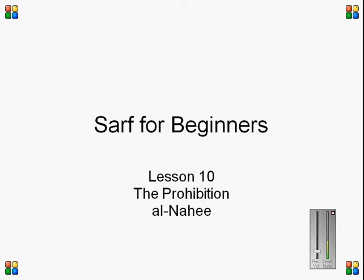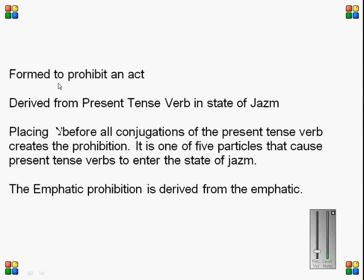Assalamu alaikum, welcome to Sarf for Beginners, Lesson 10: the prohibition, al-nahi. The prohibition is used to prohibit an act and it is derived from the present tense verb in the state of jazm. It is formed by placing 'la' before all conjugations of the present tense verb to create the prohibition.